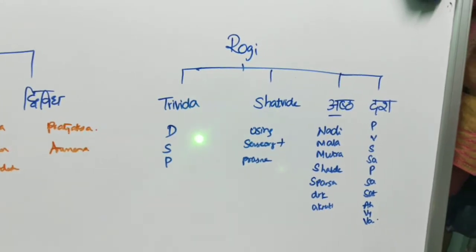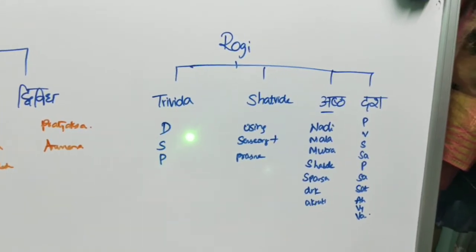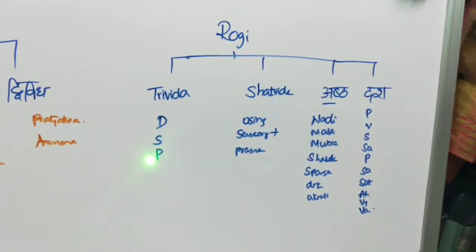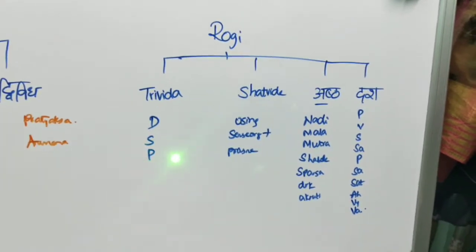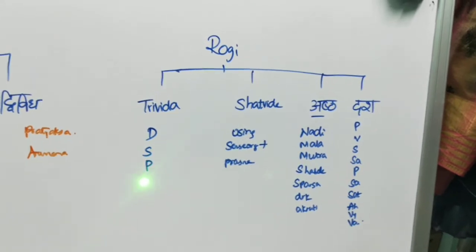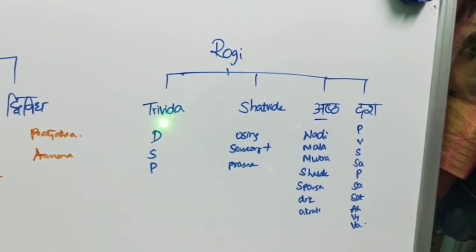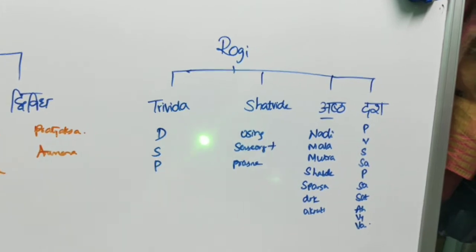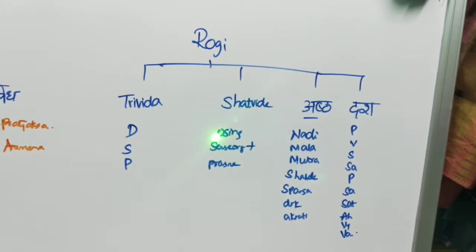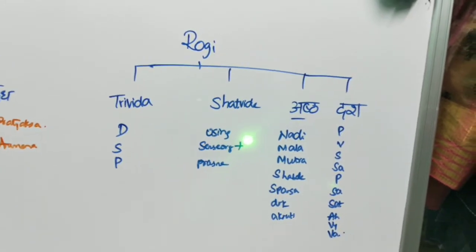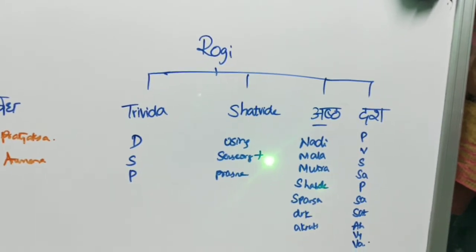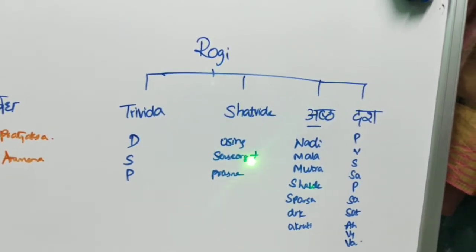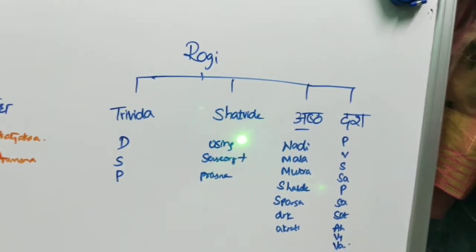Trividha Pariksha in Rogi Pariksha means Darshana, Sparshana, and Prashna. Darshana means by observing, Sparshana means by touching, and Prashna means by asking questions. Shatvida Pariksha involves using all our sense organs — Panchendriya plus Prashna — and was described by Sushruta.